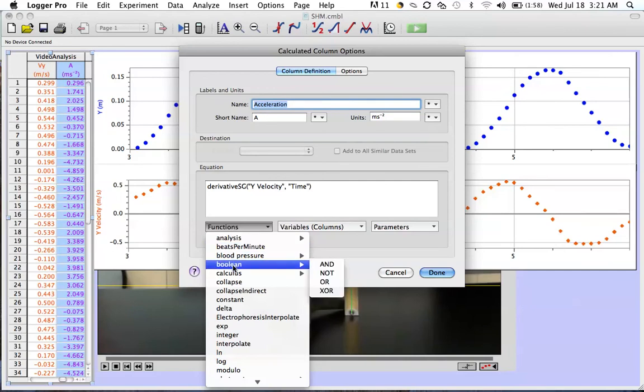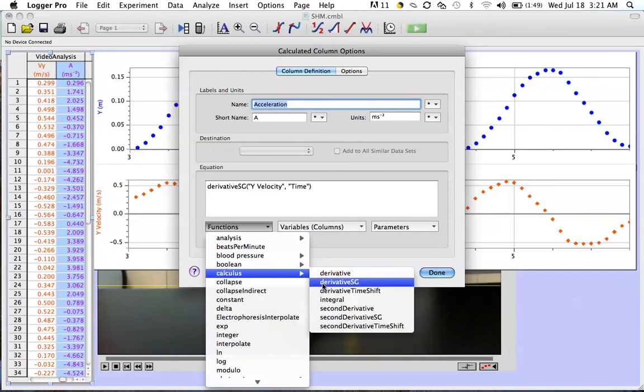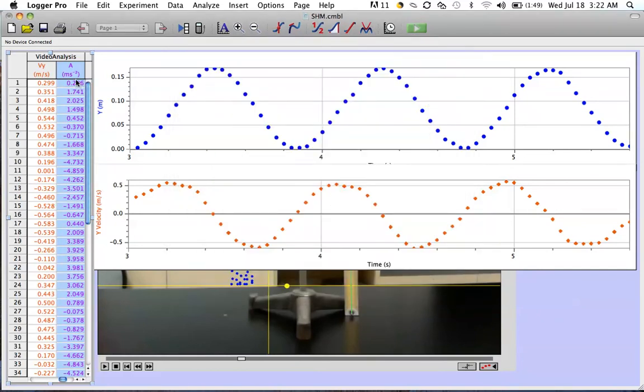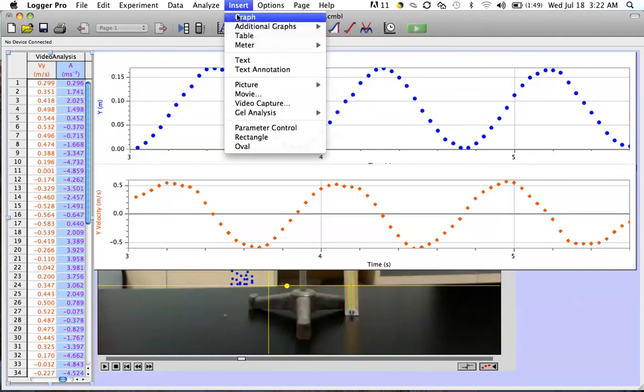So I chose under Calculus the derivative, and then under Variables the y-velocity. And in doing that, it has now calculated what the acceleration is as the object was undergoing simple harmonic motion.